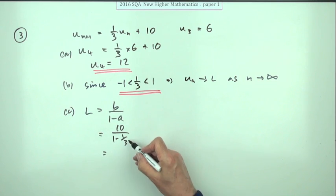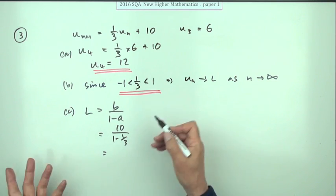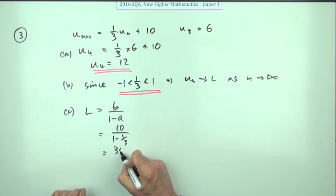so it's 1 minus a third, and then multiplying everything by 3, or whichever way you choose, you'd have 30 over 3 minus 1, 30 over 2, which is 15, so the limit's 15.